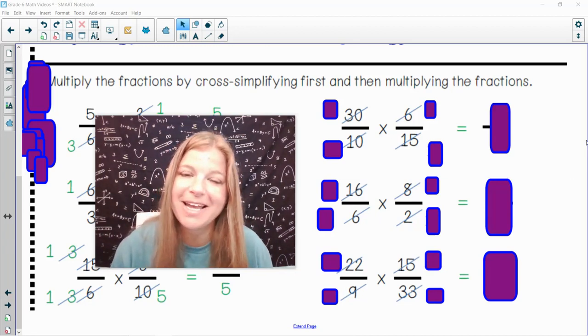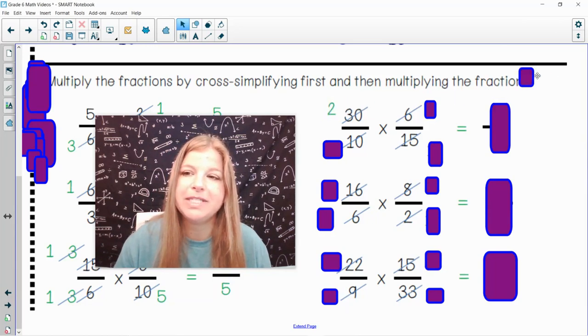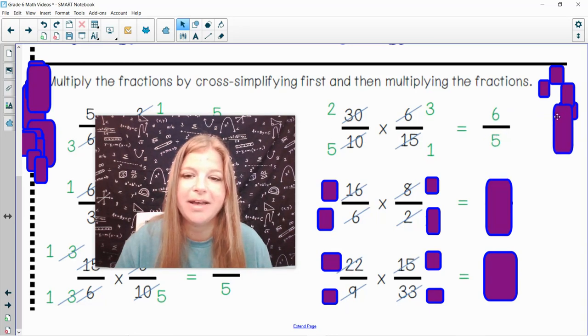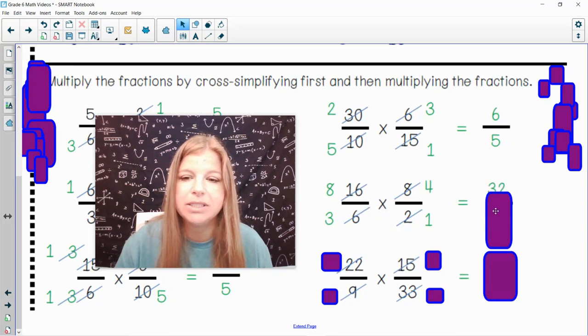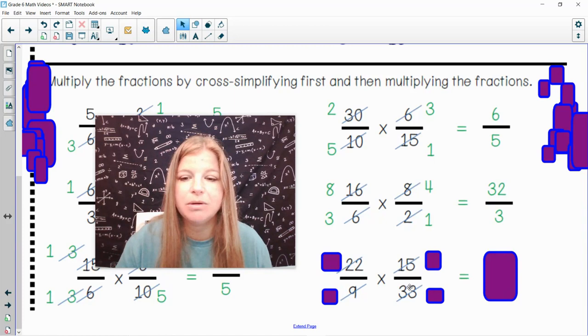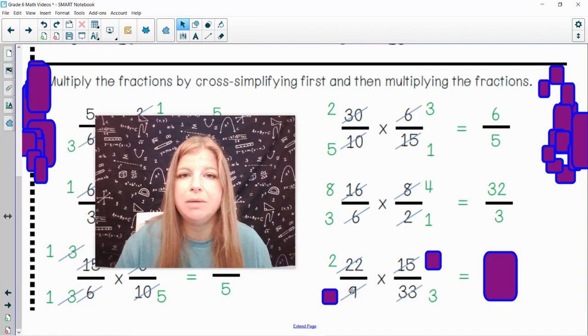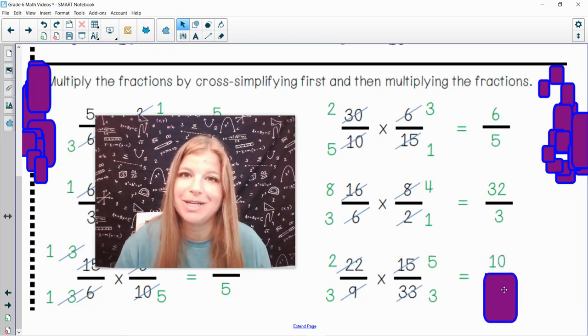Alright, hopefully you pressed play and you're ready to check your answers. Let's take a look. 30 and 15 divide by 15, so that becomes 2 over 1. 6 and 10 divide by 2, so that becomes 3 over 5. 2 times 3 is 6. 5 times 1 is 5. Next one, 16 divides by 2. So 16 divided by 2 is 8. 2 divided by 2 is 1. 8 over 6 divide both by 2 also, so that would become 4 over 3. 8 times 4 is 32. 3 times 1 is 3. And the last one, 22 over 33 divide by 11, so that becomes 2 over 3. 15 over 9 both divide by 3, which would become 5 over 3. And then 2 times 5 is 10, and 3 times 3 is 9.